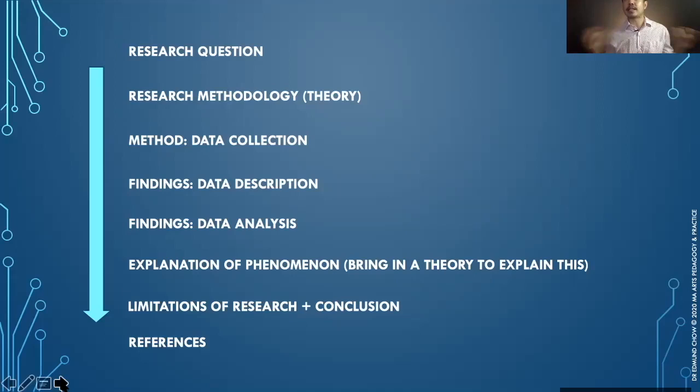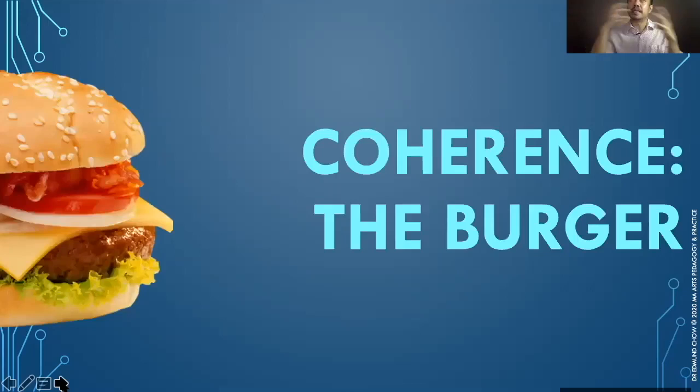That's the flow you should be able to see at a glance — even if you use chapter headers or section headers, I should be able to see the flow, because this is a standard flow for all academic research writing. Now let's take a look at coherence. Coherence is about the burger.